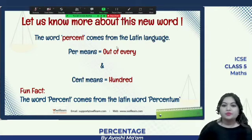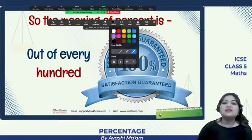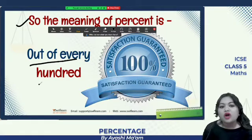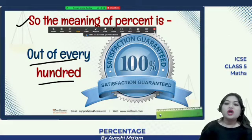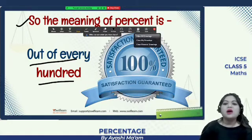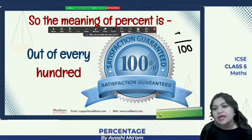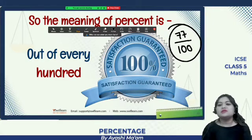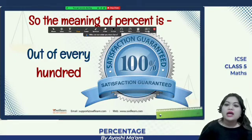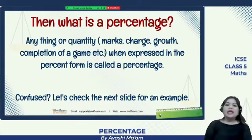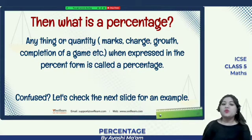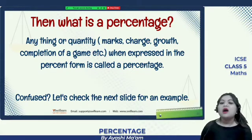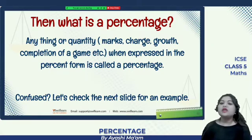Out of every hundred is the meaning of percent. For example you can see 100% satisfaction guaranteed, right? So this is the meaning of percent, that means out of hundred what is the amount. For example if your full marks is hundred and if you are getting 77 marks, so this is also a percentage, we can write it as 77 percent, that means out of hundred you have got 77. So anything or quantity, this quantity can be marks, it can be charge, it can be growth, it can be completion of a game etc., when expressed in the percent form is called as a percentage. If we express it out of every hundred, how many marks you have got, in the battery how many charges out of every hundred, then we will call it percentage.